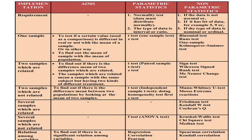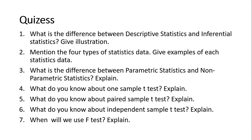Next is relations among variables. To find out if there is a significant relation among variables, do a normality test first if you want to use parametric statistics. If the data distribute normally, you can use regression, correlation, or Pearson correlation. If the data do not distribute normally, go to non-parametric statistics and use Spearman correlation or Kendall correlation.